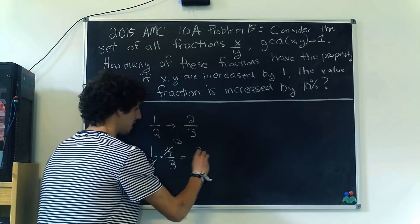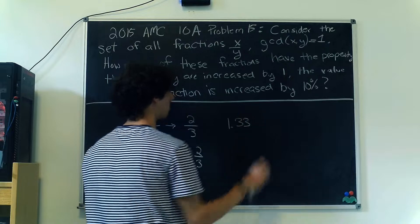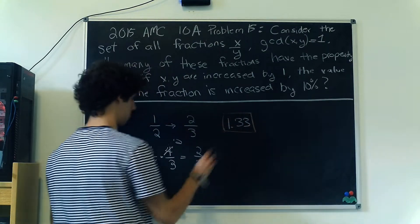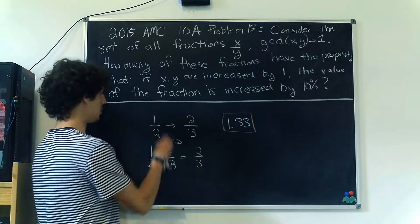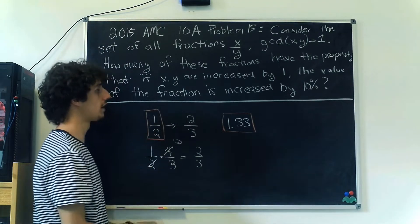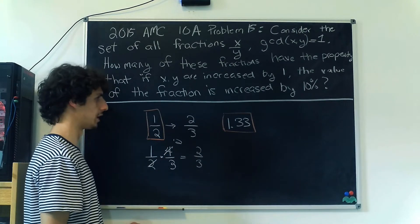So this is actually a 33% increase on our fraction. This is what happens when you apply this action to 1/2. We're looking for a 10% increase, not a 33% increase. That's generally what we're looking for here.